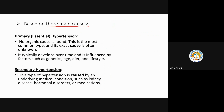Based on main causes: Primary hypertension, also called essential hypertension — there is no known organic cause. It typically develops over time and is influenced by factors such as genetic predisposition, age, diet, and lifestyle. Because we don't know the exact cause, any contributing factor could be responsible.